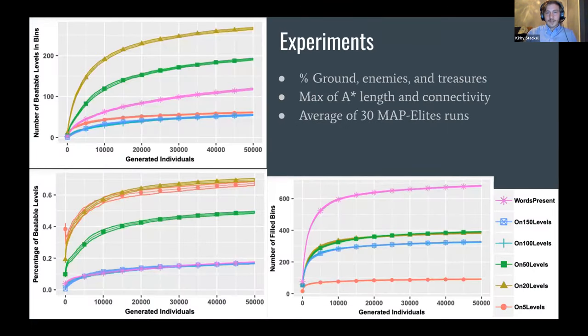So now I'll go over a little more about the specifications of the experiments that we ran. So the MAP-Elites bins, as I talked about before, were defined as the percent ground, the number of enemies and the number of treasures. Also the fitness was found by the max of the A-star path length and the connectivity. So if a level was not beatable, it would get an A-star length of negative one and the connectivity, which is the amount of level that is traversable, lies between zero and one because it's a percentage. So that score will be higher if the solution path length is negative one. Also all of these are averaged over 30 MAP-Elites runs. So it's not just one run of each of them.